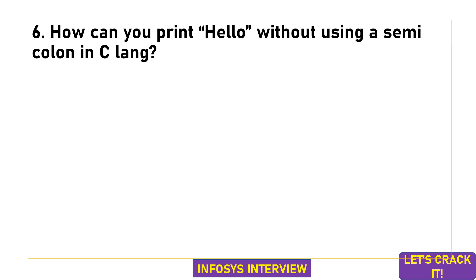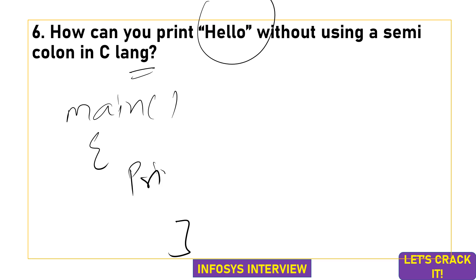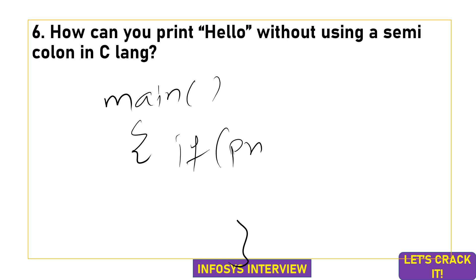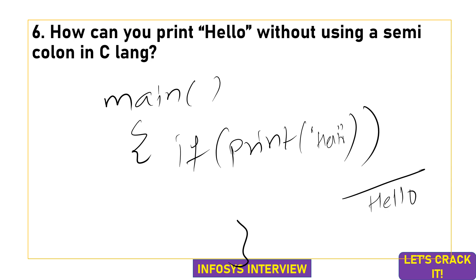The next question was: how can you print text without using a semicolon in C language? Normally in C, we use a print statement followed by a semicolon. But yes, it is possible to print without a semicolon. One way is to use an if condition — inside the main method, use an if condition and place the printf statement directly inside the if condition without a semicolon. The console will print the text, such as 'Hello'.